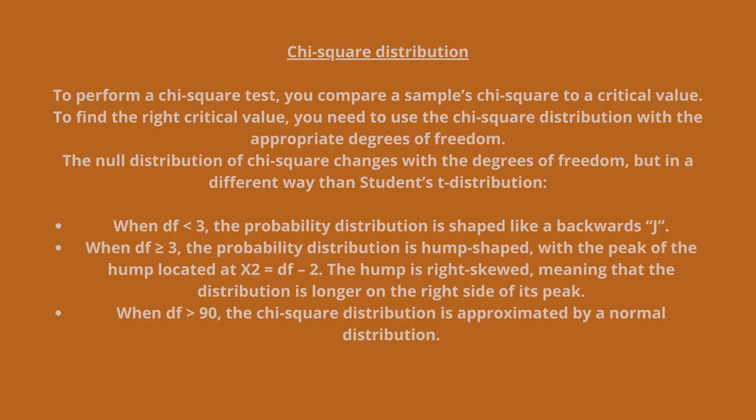Chi-square distribution: to perform a chi-square test, you compare a sample's chi-square to a critical value. To find the right critical value you need to use the chi-square distribution with the appropriate degrees of freedom. The null distribution of chi-square changes with the degrees of freedom, but in a different way than Student's t distribution.